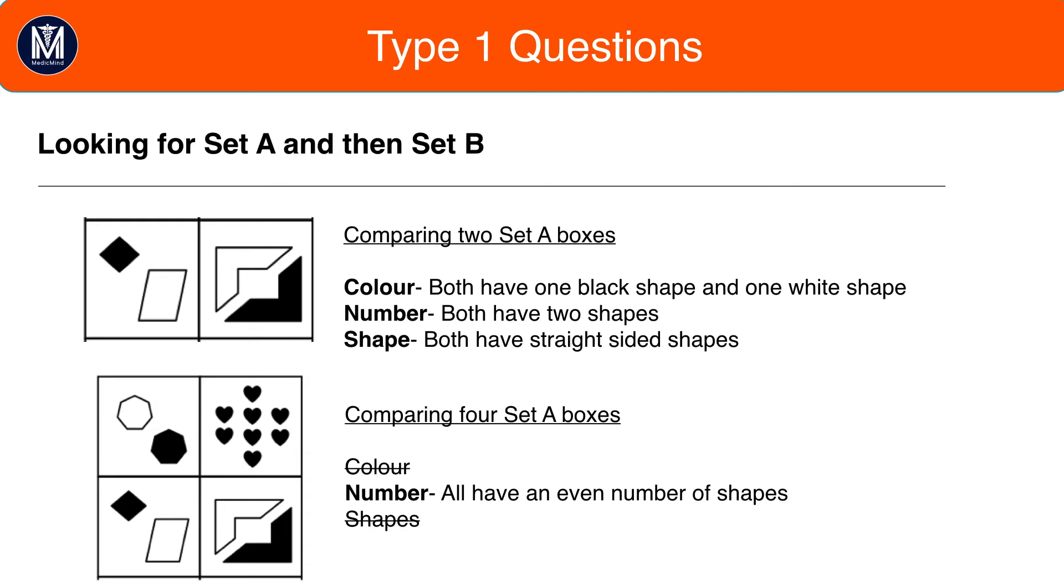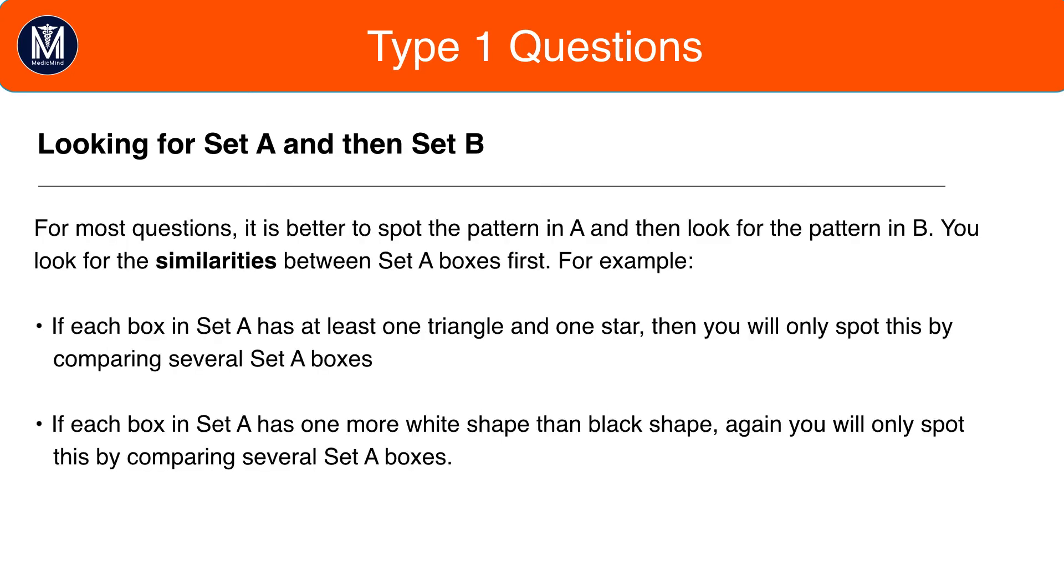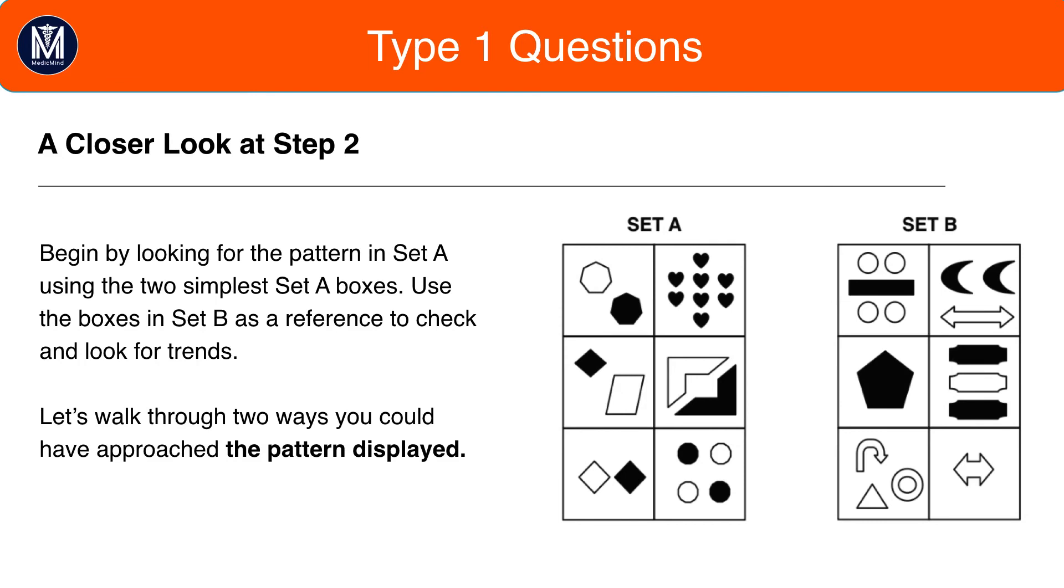So, let's apply this to the previous question that we did with odd and even. Going back to the question here, just to have a look, you've got Set A and we have Set B. So, we're going to pick the simplest two boxes in Set A and find the pattern in Set A before we find the pattern in Set B.